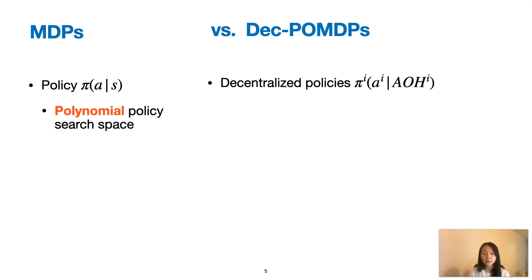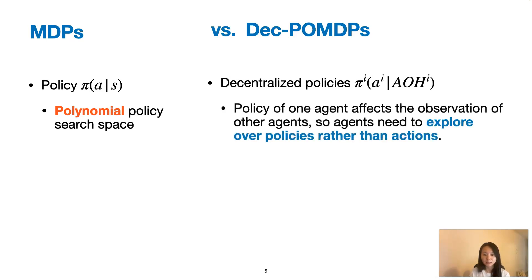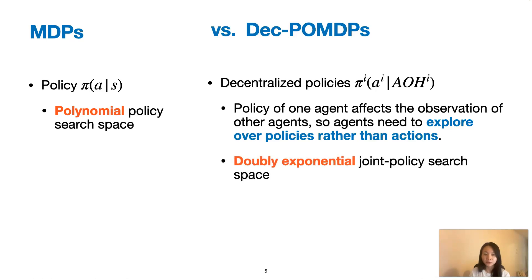On the other hand, the goal for DECPOMDPs is to find decentralized policies that each map individual action observation history to individual actions. Because the policy of one agent in a DECPOMDP affects the observations of the other agents, agents need to explore over policies rather than actions. This results in a joint policy search space of doubly exponential instead of just polynomial. To find the optimal policy, we need an exhaustive search over all possible policies. Thus, current state-of-the-art methods, which are mostly model-free, suffer from sample inefficiency due to the large policy search space, limiting their applicability in real-world problems.